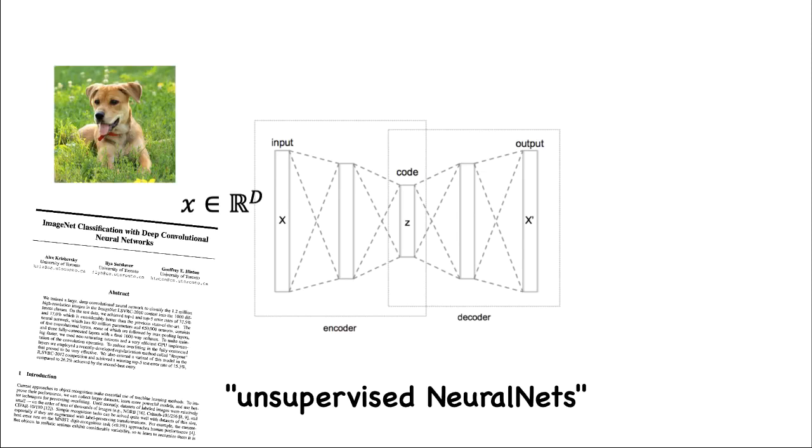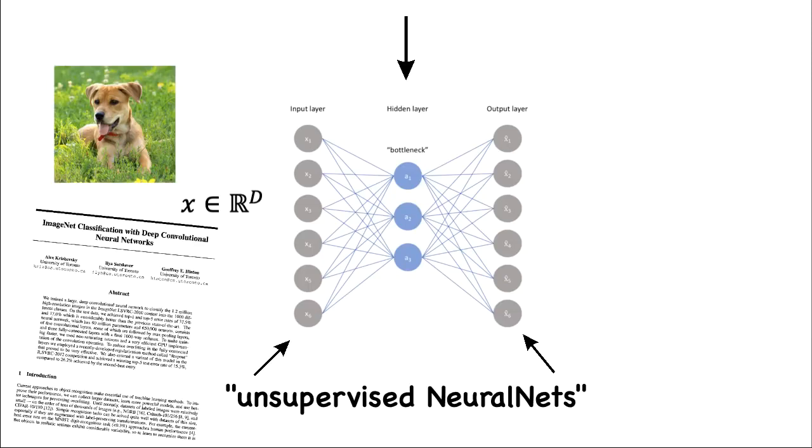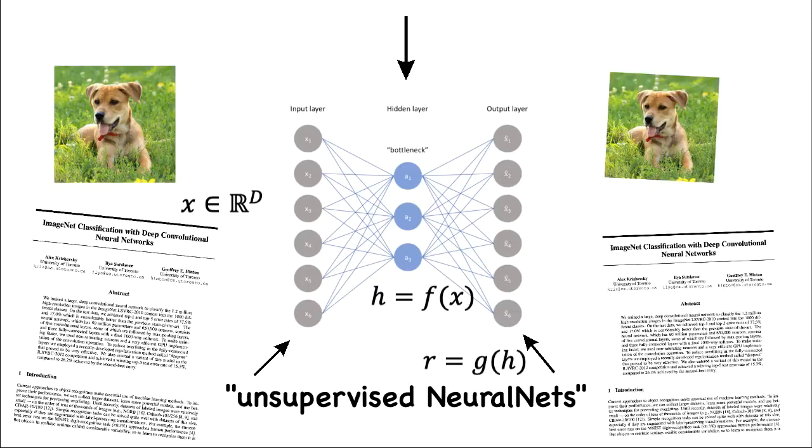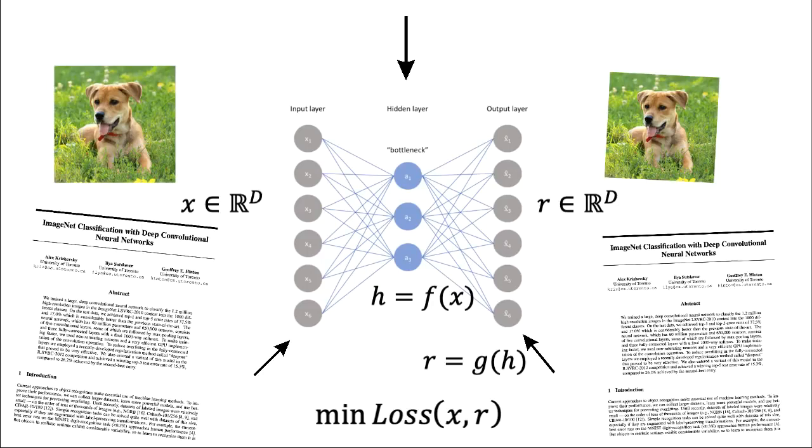The architecture consists of three parts, an encoder, a bottleneck, and a decoder. At the simplest level, we can have a layer of fully connected neurons for each part. The output represents the reconstructed input, hence it has the same dimensions. The objective is to learn a representation that will minimize the reconstruction loss. Learning these weights can be done with techniques like recirculation or backpropagation.